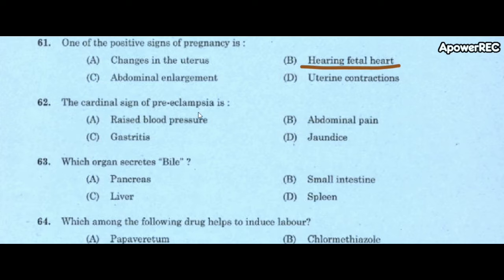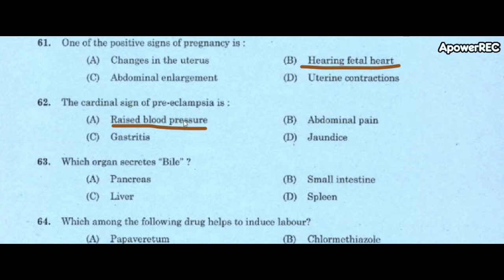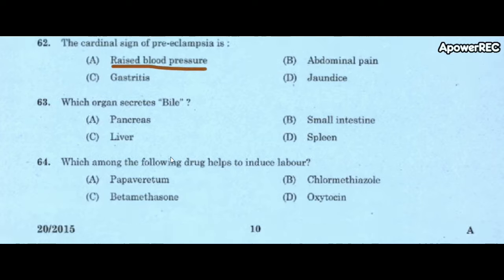Next question: the cardinal sign of preeclampsia is A) raised blood pressure, B) abdominal pain, C) gastritis, D) jaundice. Correct answer is raised blood pressure. The cardinal sign of preeclampsia is raised blood pressure.